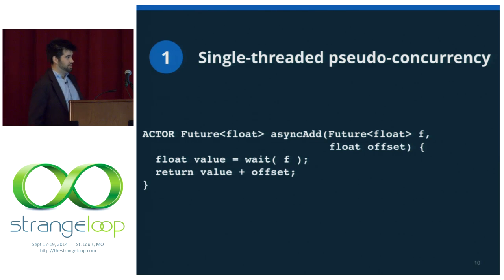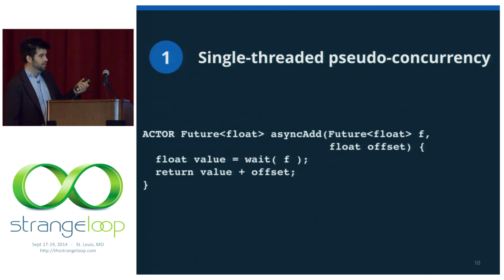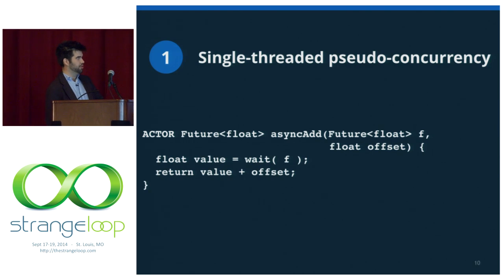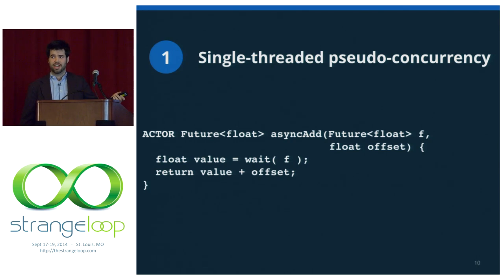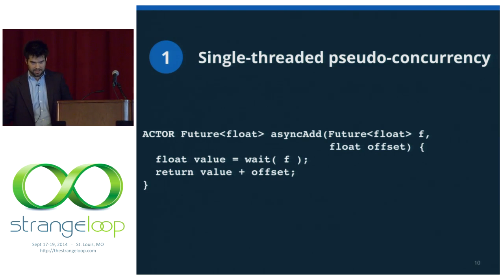Flow lets you write things like this — the simplest possible actor you could write. It's like an asynchronous adder. It takes a future float and a float, it waits for the future to become ready, it returns the sum. There are two things to immediately notice. First, the actor keyword is not C++ — this tells the flow compiler that what follows is an actor definition. Second, this return type is wrong: it's declared to return a future float but this sure looks like it's just returning a plain ordinary float. That's because this function body is almost declarative — you're telling the actor compiler what you want to have happen. What's actually going to happen is it generates a new function and a new class. The function immediately returns a future which will become ready as soon as the actor is done executing and everything asynchronous is finished happening.